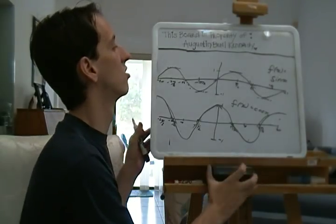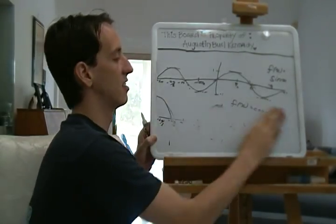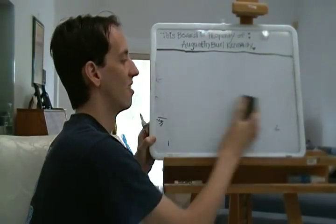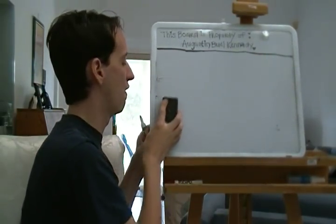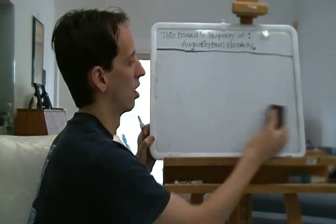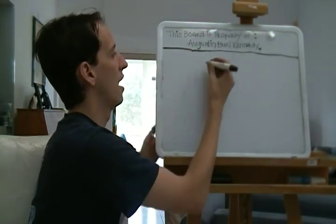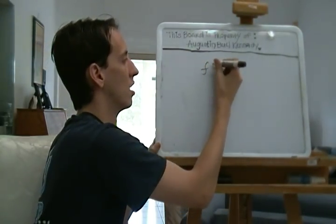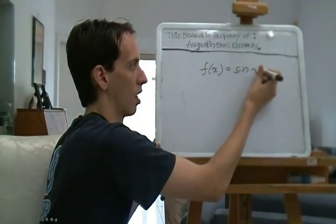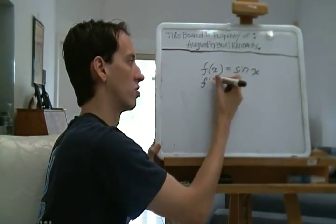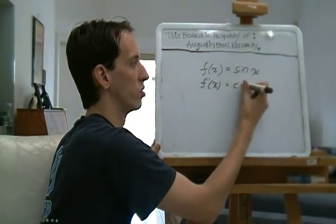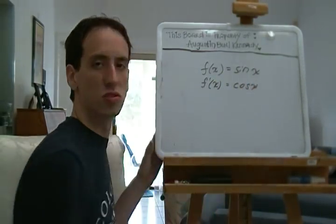That's as far as I'm going to go in proving this: if f of x is sine x, then f prime x equals cosine x.